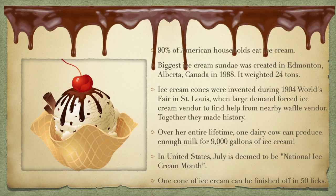Over her entire lifetime, one dairy cow can produce enough milk for 9,000 gallons of ice cream. In the United States, July is National Ice Cream Month. And did you know that one ice cream cone can be finished off in about 50 licks?